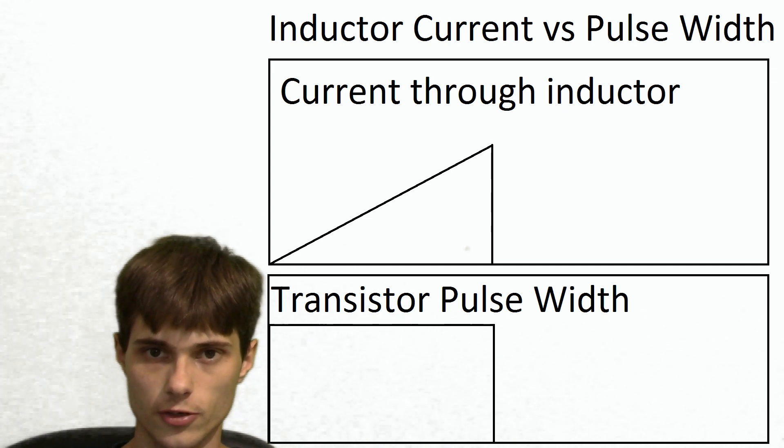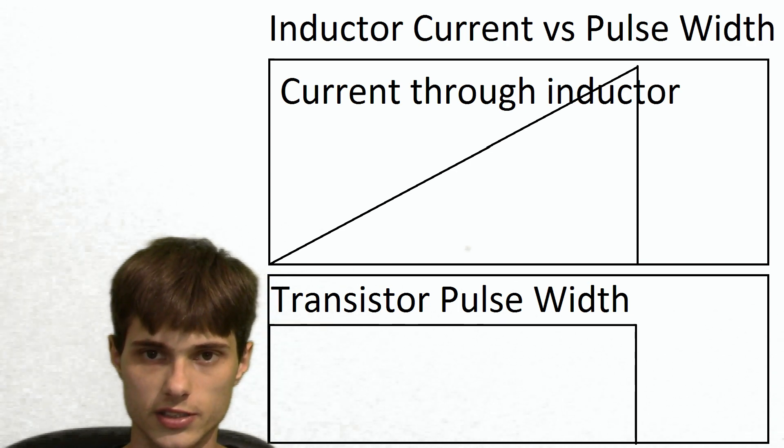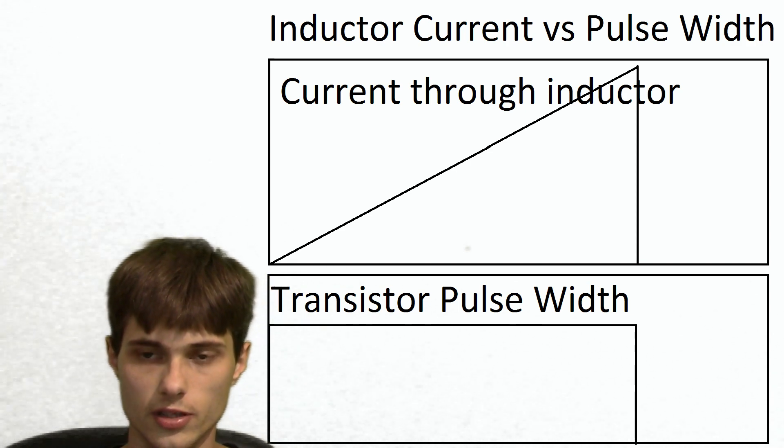So if we want the output voltage to be higher, we actually have to charge up the inductor more. And that means leaving the transistor on for a longer time. So the longer we have that inductor connected to the line, the more current it's going to build up, to a certain extent. We couldn't go 100% pulse width, obviously.